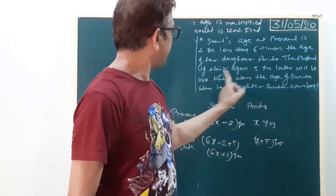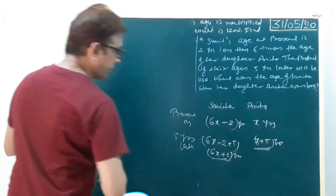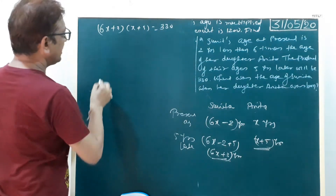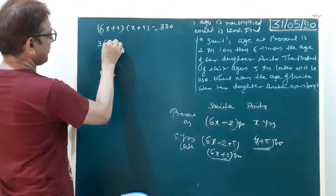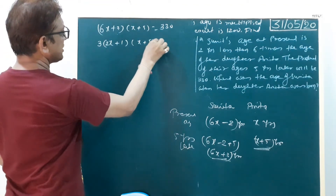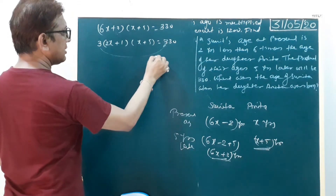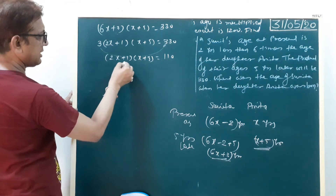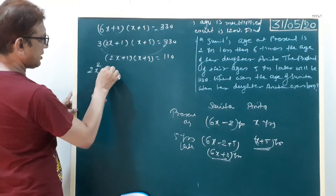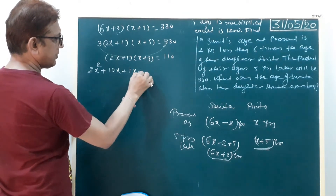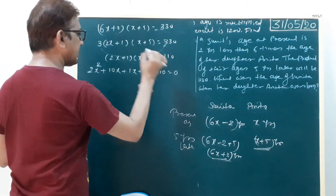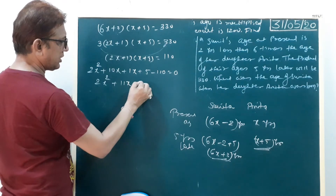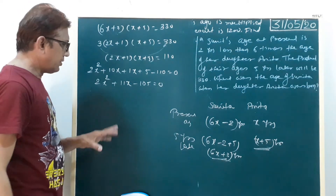The product of their ages five years later will be 330. Product of 6X plus 3 and X plus 5 equals 330. In the first bracket, 3 is the common factor. Simplify: 3 times 2X plus 1 times X plus 5 equals 330. Three divides 330 giving 110. So the remaining bracket is 2X plus 1 times X plus 5 equals 110. Multiply out: 2X squared plus 10X plus X plus 5 equals 110. Left side becomes 110, equal to zero. Our quadratic equation is 2X squared plus 11X minus 105 equals 0.